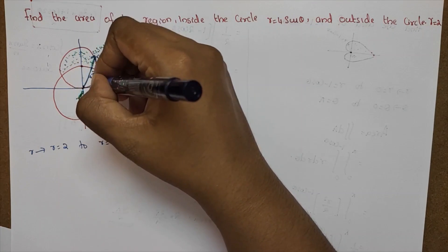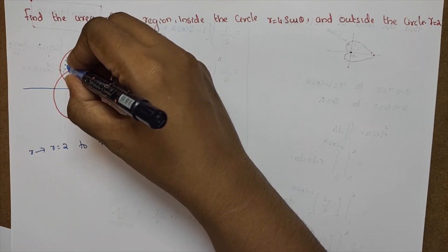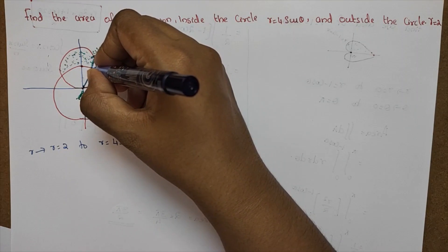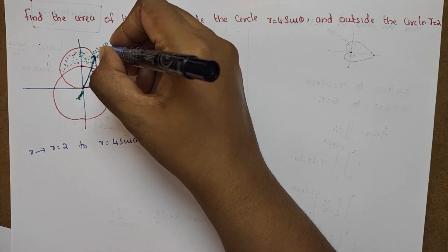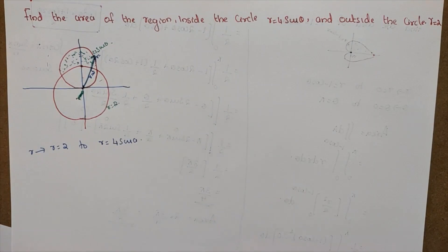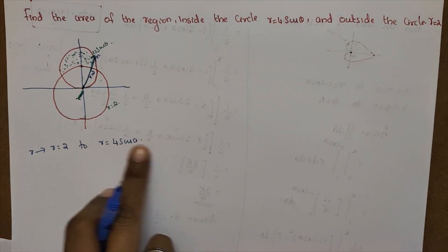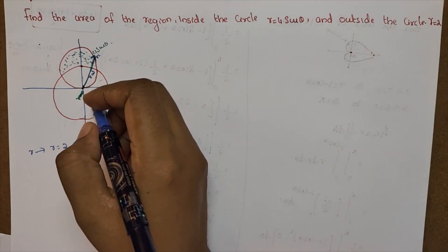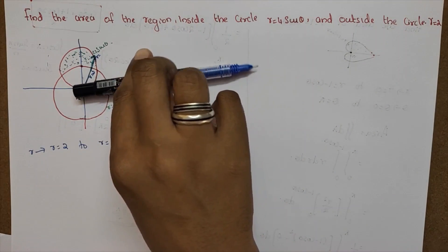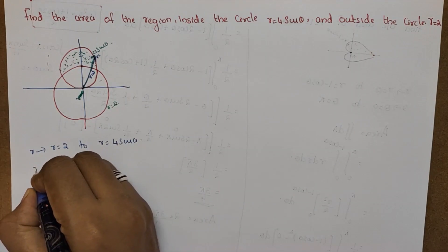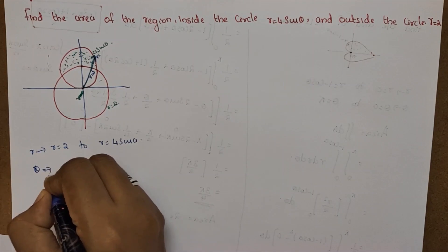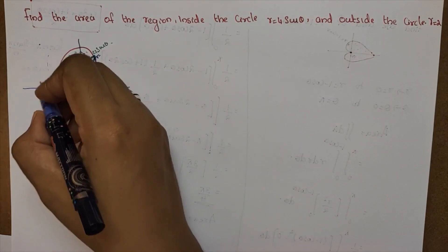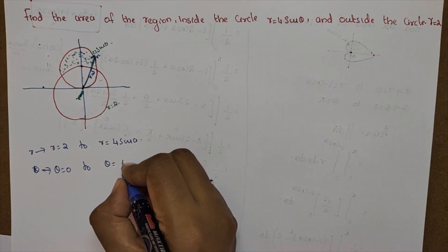We are going to find the area of the region. In the end, r varies from 2 to 4 sin theta. So theta varies from theta equal to 0 to theta equal to pi.